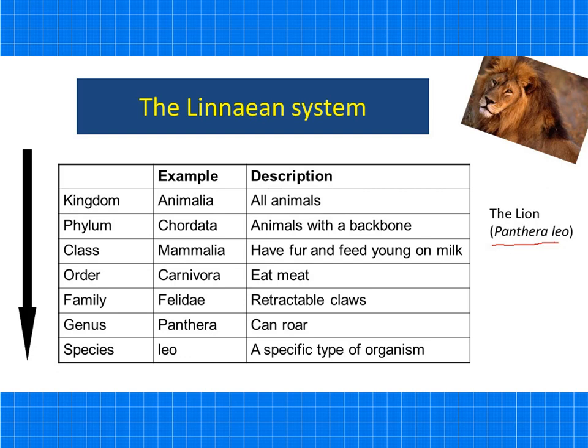Linnaeus classified living things into different groupings: kingdom, phylum, class, order, family, genus, and species. For your exam, you'll need to learn that order. Here's an example related to the lion, whose Latin name is Panthera leo.